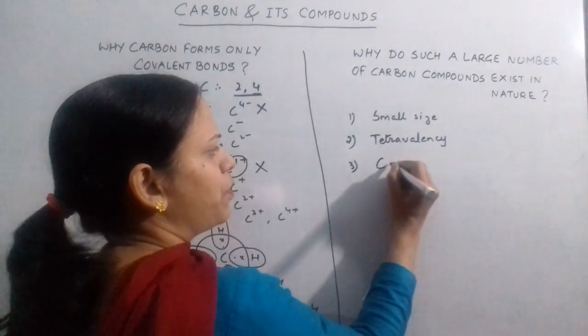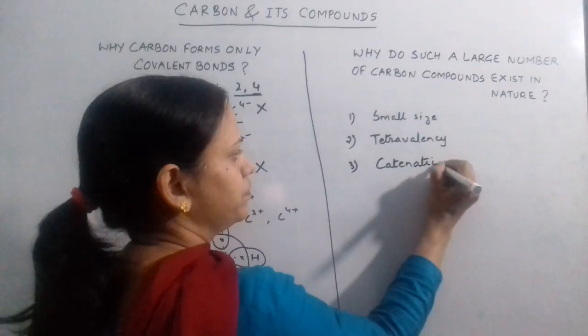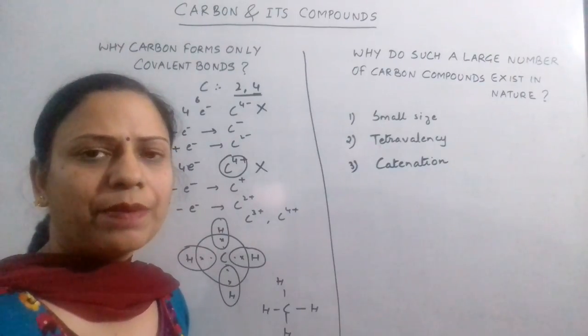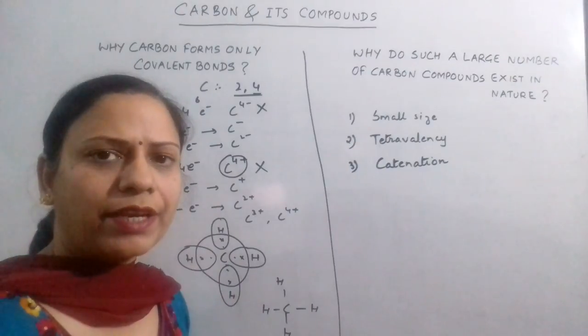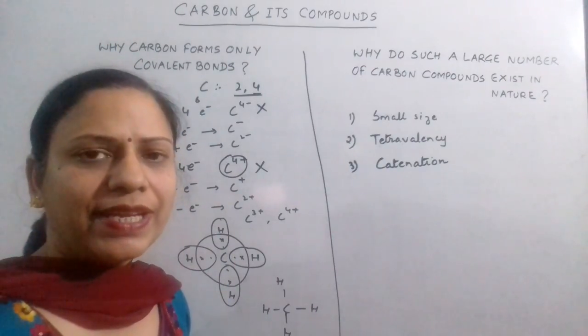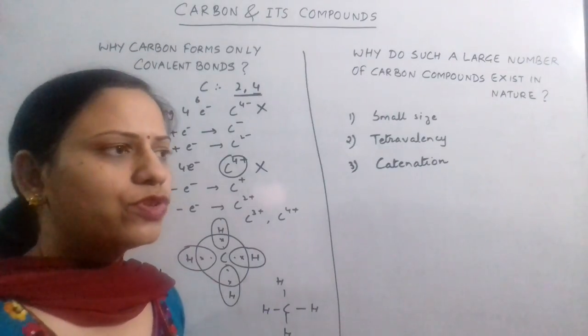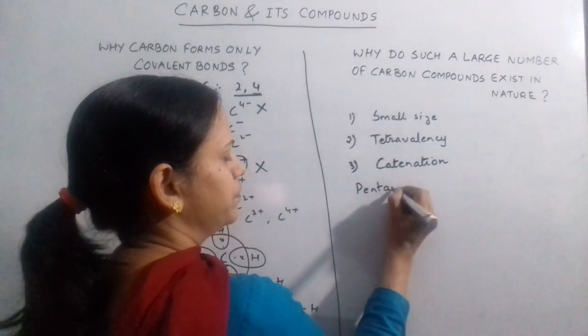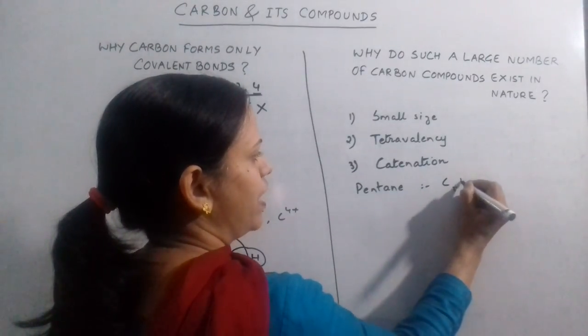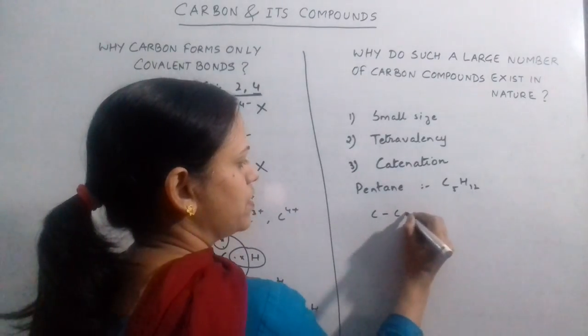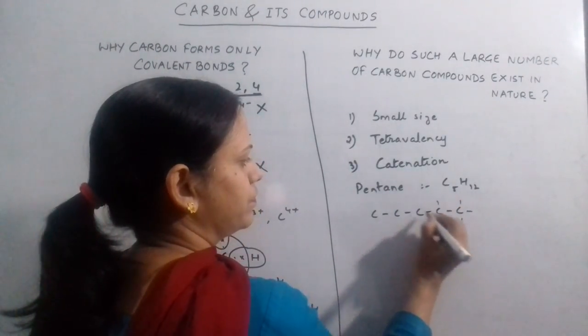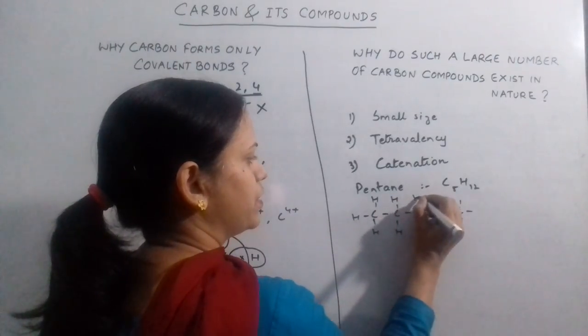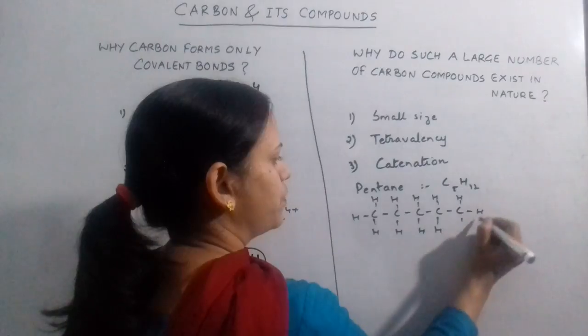The third and most important property is catenation. Catenation means the linking ability of carbon atoms. Carbon has the unique property of linking with itself or with other monovalent atoms to form long chains, rings, branch chains and many other different structures. Taking the example of pentane with formula C5H12, we can see it forms different structures. This is normal pentane. Each line I am drawing represents a bond with hydrogen, a single bond with hydrogen. This is one structure of pentane.